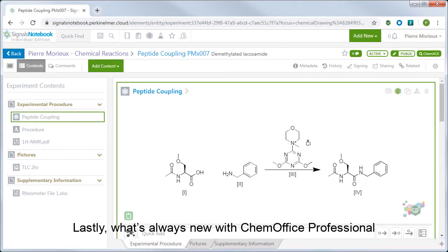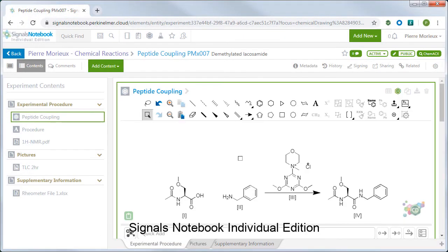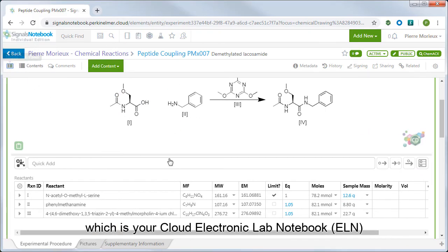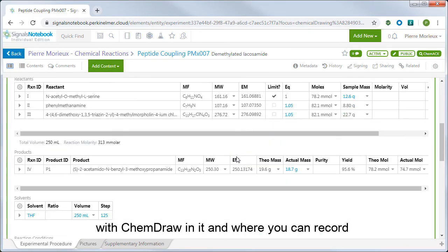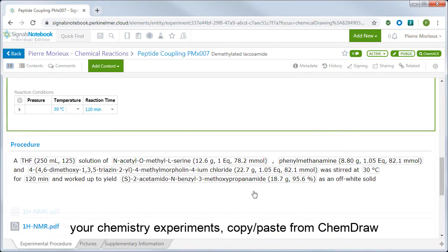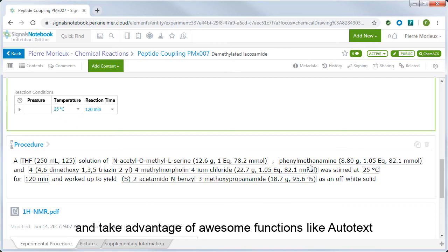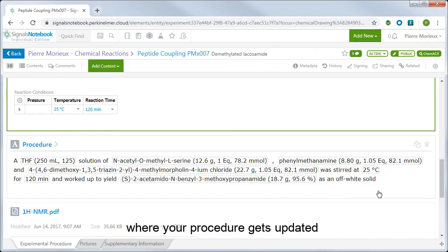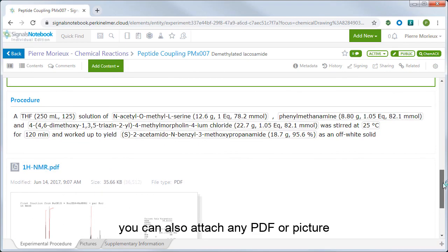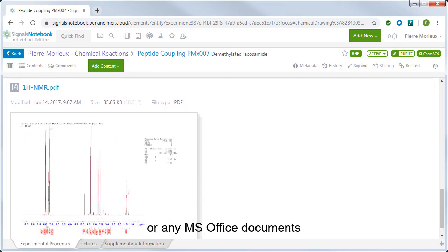Lastly, what's always new with ChemOffice Professional is Signal's Notebook Individual Edition, which is your cloud electronic lab notebook with ChemDraw in it, and where you can record your chemistry experiments, copy-paste from ChemDraw, calculate stoichiometry and yields, do structure searching, share experiments, and take advantage of awesome functions like auto-text, where your procedure gets updated when you modify another field in your experiment. You can also attach any PDF and annotate pictures or any Microsoft Office documents, so be sure to check it out as well.